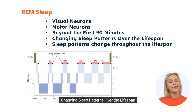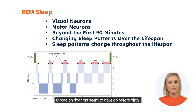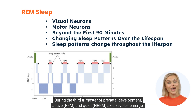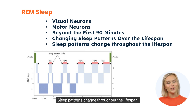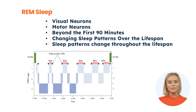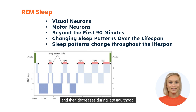Changing sleep patterns over the lifespan: As any parent knows, sleep patterns change throughout childhood and adolescence. Circadian rhythms seem to develop before birth — during the third trimester of prenatal development, active REM and quiet sleep cycles emerge. Sleep patterns change throughout the lifespan: total sleep time decreases, as does the percentage of a night's sleep spent in deeper slow-wave sleep. The percentage of REM sleep increases during childhood and adolescence, remains stable throughout adulthood, and then decreases during late adulthood.